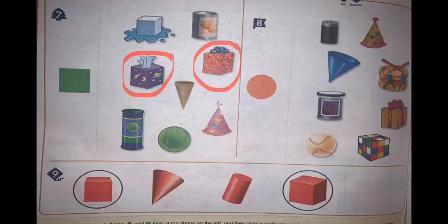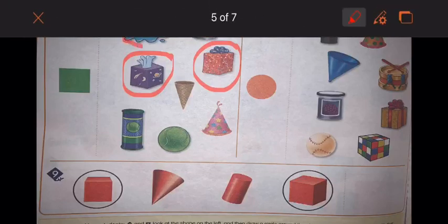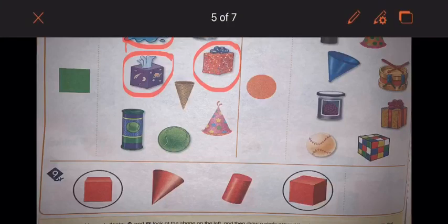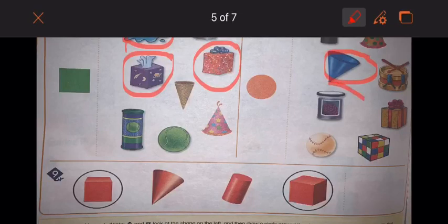Now the second question, number eight. They want a circle. When I look at the objects that have a flat surface which is a circle, I always think of a cone and a cylinder. So I will circle the objects that look like a cone and cylinder.